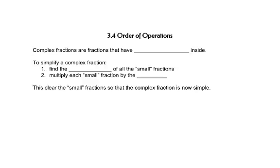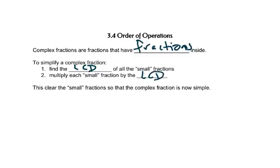Complex fractions are fractions that have fractions inside. To simplify a complex fraction, find the common denominator — the LCD — of all the small fractions, and then multiply each small fraction by that LCD. This will clear all of those small fractions so that the complex fraction is now simple.